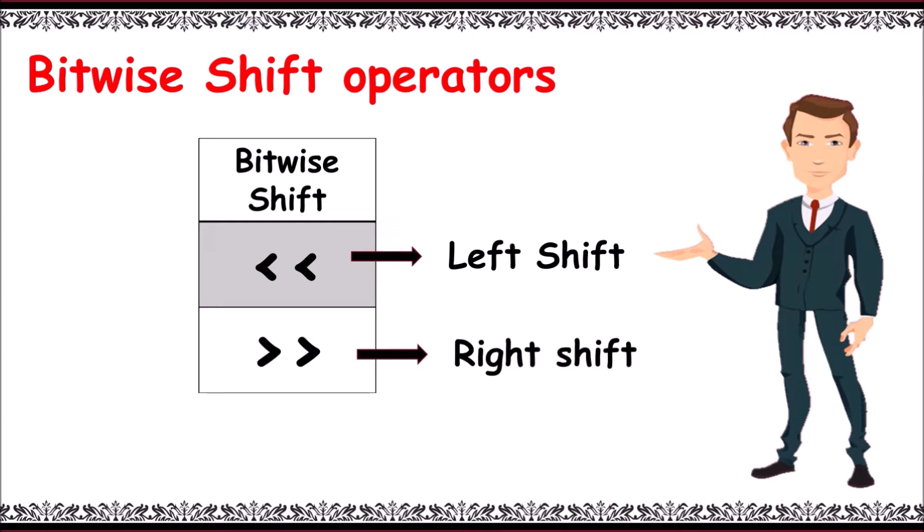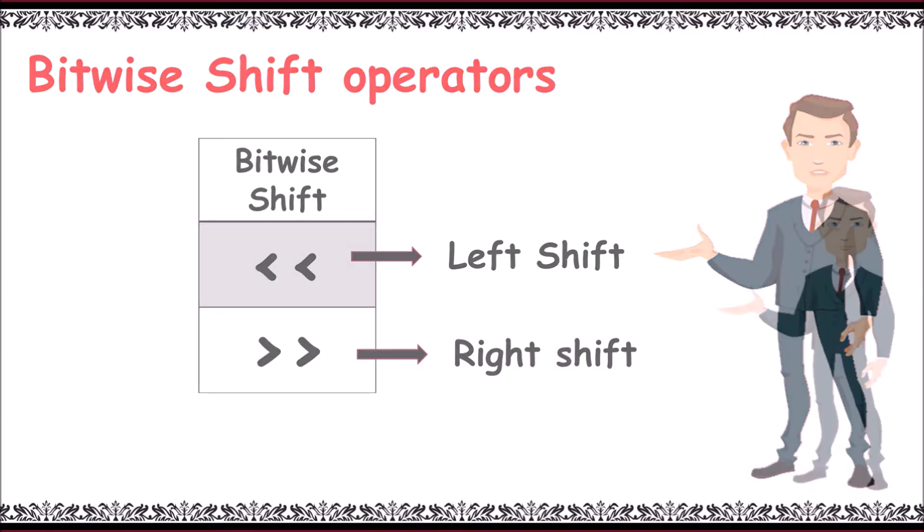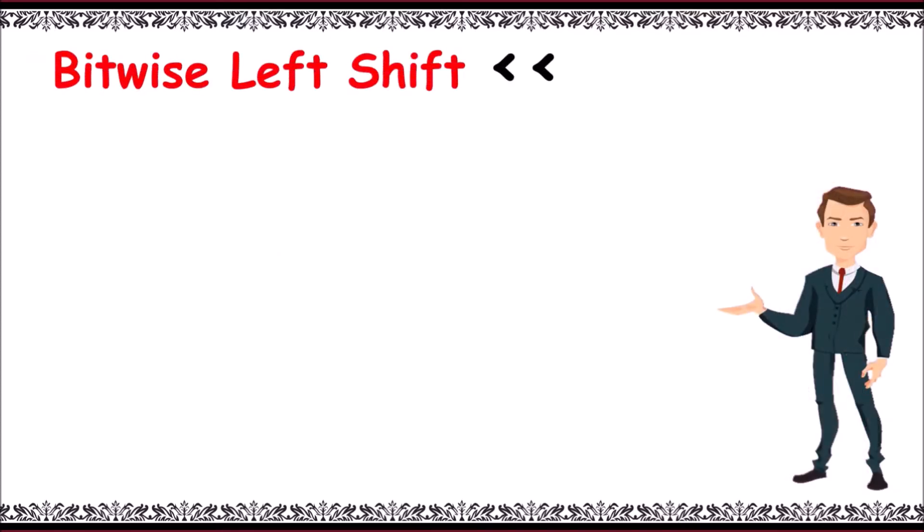Now, left shift - by the name itself we can understand shifting positions to its left. Here in this example, 5 left shift operator 2. First we need to write the binary number of the first number, that is 5, which is 1 0 1.